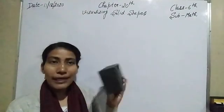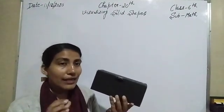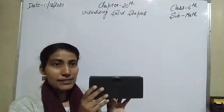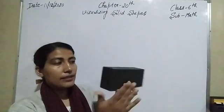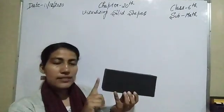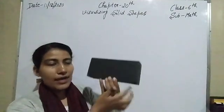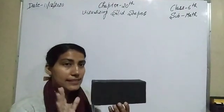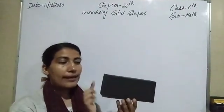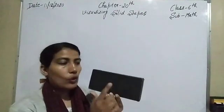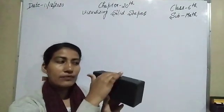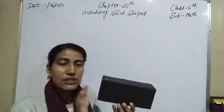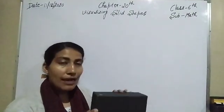Here I have the shape of a cuboid. If I have to count the number of faces of this cuboid, look at what faces are there: here is one, this side is two, this one is three, this one is four, that is five, and that one is six. So this cuboid has six faces.